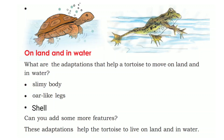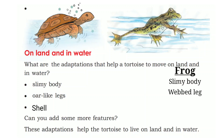The adaptations of the frog are: first, a slimy body; second, webbed legs — meaning all the fingers are connected to each other — which help with swimming; and third, it can respire in both land and water, as respiration is done through the skin and also the lungs.